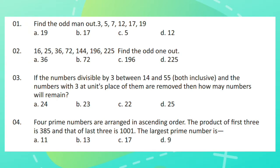Question 1. Find the odd man out. 3, 5, 7, 12, 17, 19. Question 2. 16, 25, 36, 72, 144, 196, 225. Find the odd one out.